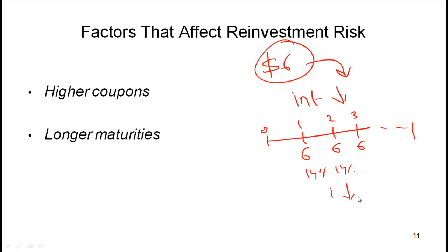So the risk is if interest rates go down to say 10%, then the coupon amount is being invested at a lower rate and hence your actual yield to maturity will end up being less than the YTM of 14%. So what is it that increases reinvestment risk?